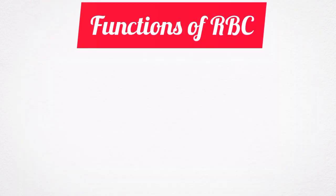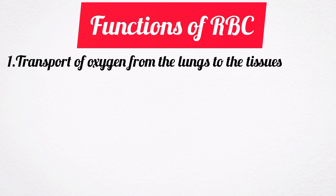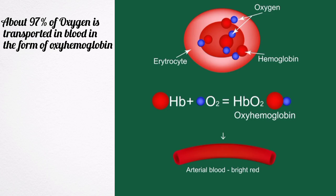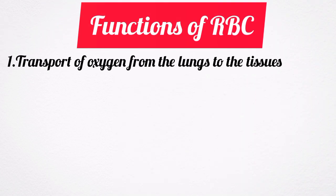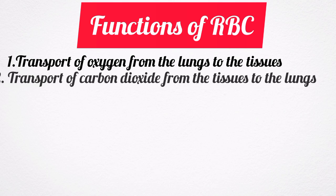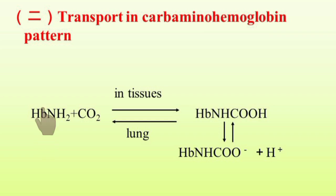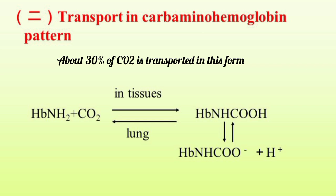Now let's talk about the functions of red blood cells. Number one is the transport of oxygen from the lungs to the tissues. Hemoglobin in red blood cells combines with oxygen to form oxyhemoglobin. About 97% of oxygen is transported in blood in the form of oxyhemoglobin. Number two is the transport of carbon dioxide from the tissues to the lungs. Hemoglobin combines with carbon dioxide and forms carboxyhemoglobin. About 30% of carbon dioxide is transported in this form.